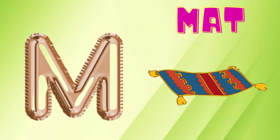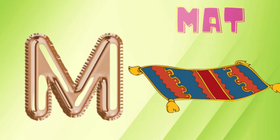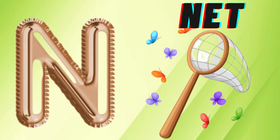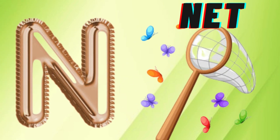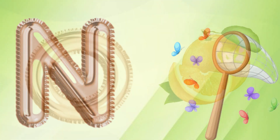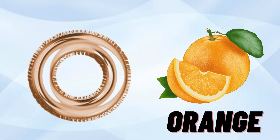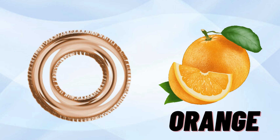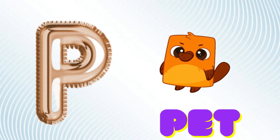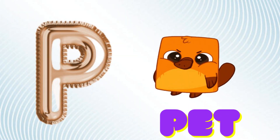M is for mat, m-m-mat. N is for net, n-n-net. O is for orange, o-o-orange. P is for pet, p-p-pet.